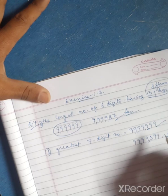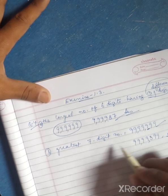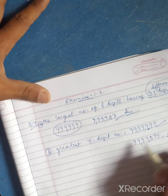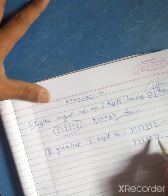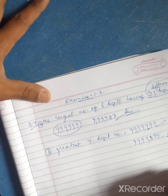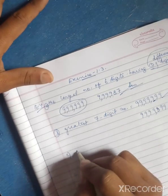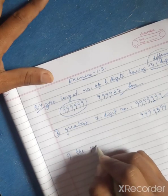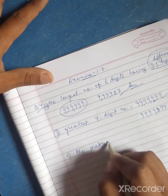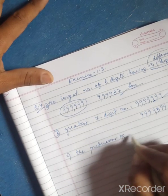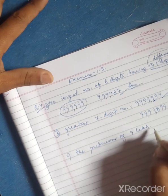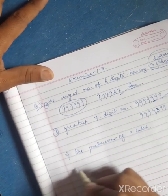The largest seven-digit number with three in the hundreds place is 9,993,999. The hundreds place contains three, and all other places contain nine to maximize the number.